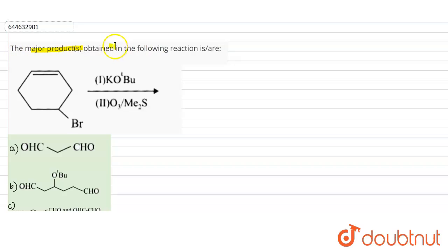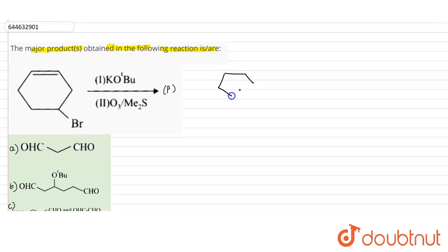The question asks to find out the major product obtained in the following reaction. The reactant here is an alkene-alkyl system — specifically cyclohexene — and at this position bromine is present.